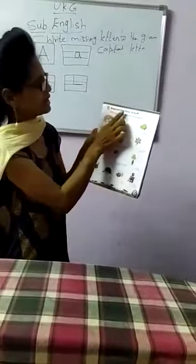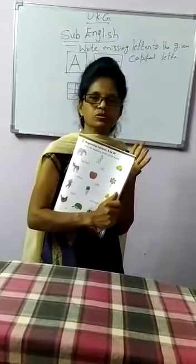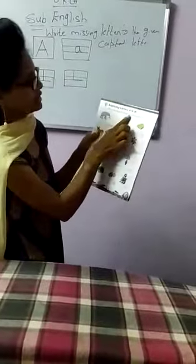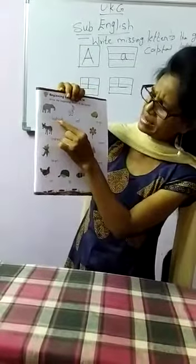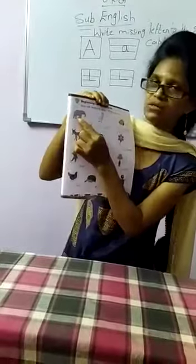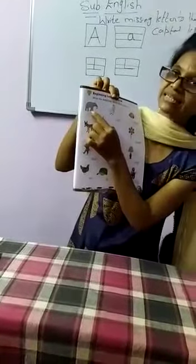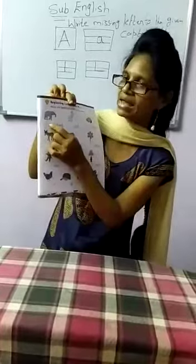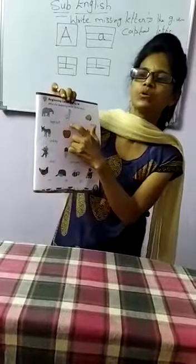Now turn to page number 7: Beginning Letters A to M. Previously we learned all capital letters A to Z, so we are perfect in those letters — how to write capital letters and how to identify the pictures. Now see: write the beginning letter of the word. I am showing you a picture. By seeing the picture, you can identify it — this is an elephant. So by seeing the picture you say it's an elephant, and which letter will come? E will come. E for elephant. And here, G for goat. M for mango. By identifying the pictures, you can write the letter.